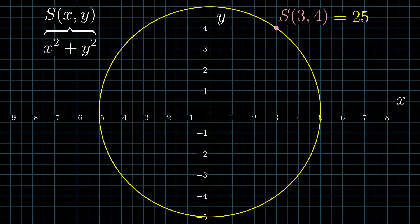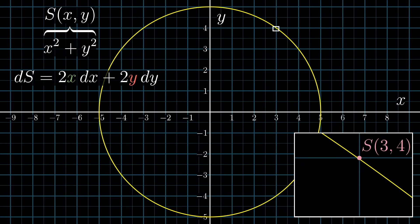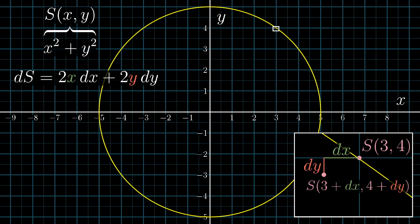Now what it means to take a derivative of this expression, a derivative of S, is to consider a tiny change to both of these variables, some tiny change dx to x and some tiny change dy to y. And not necessarily one that keeps you on the circle by the way, it's just any tiny step in any direction of the xy plane. And from there you ask, how much does the value of S change? And that difference, the difference in the value of S before the nudge and after the nudge, is what I'm writing as dS.